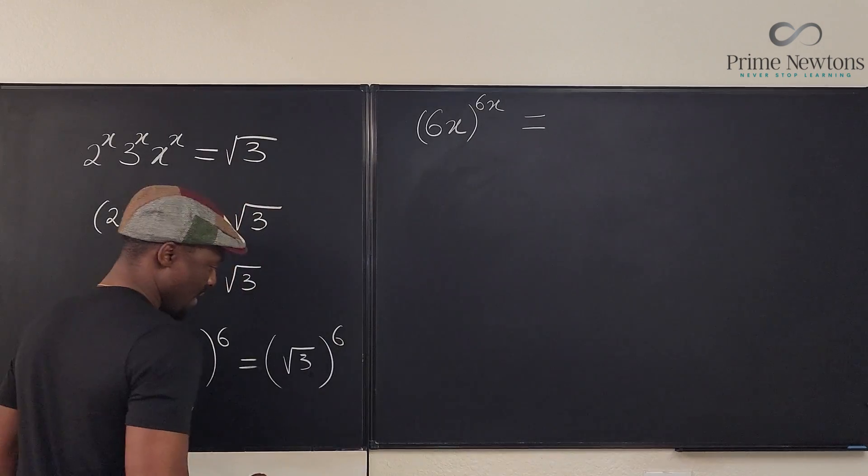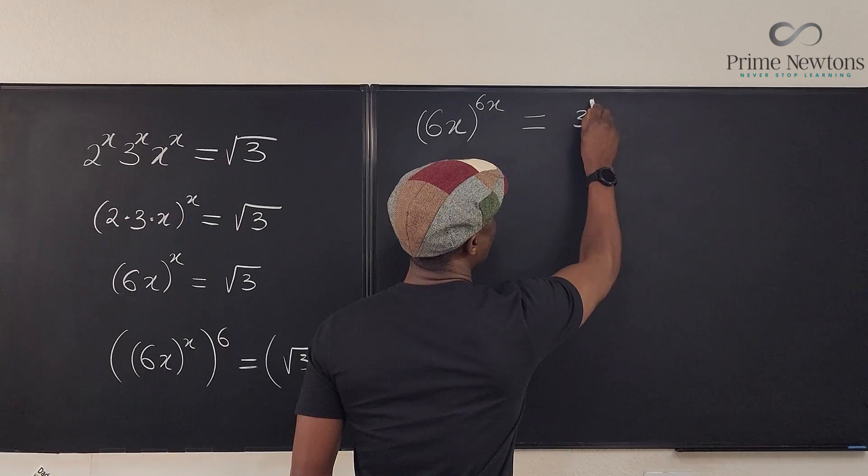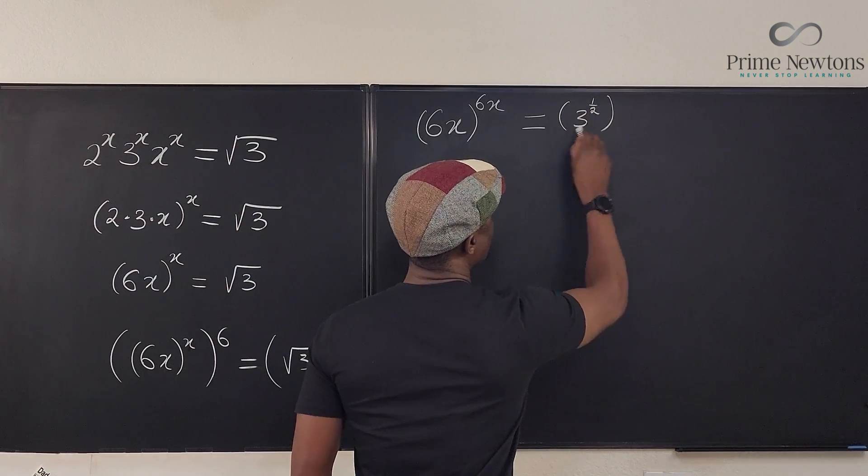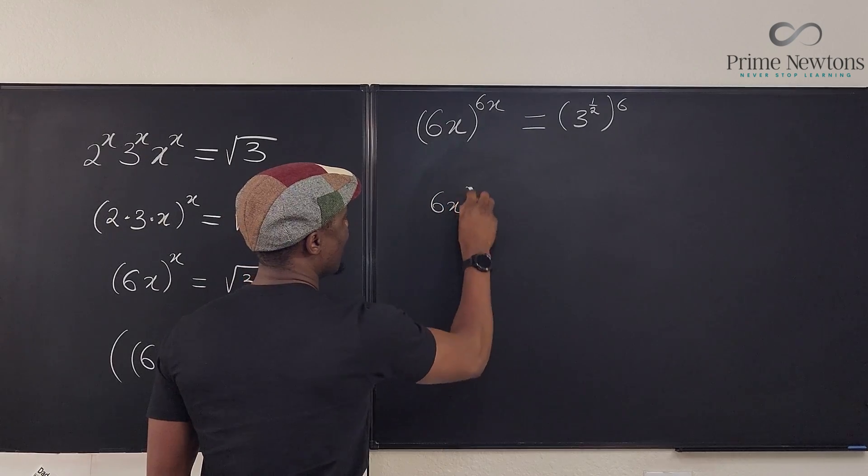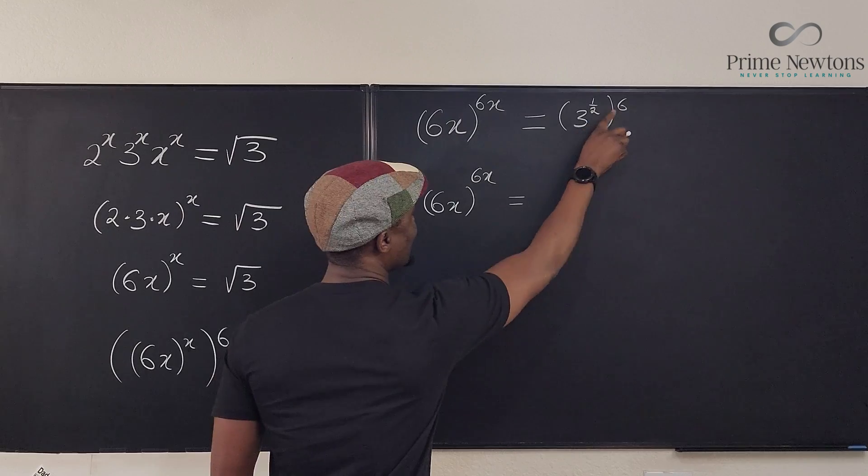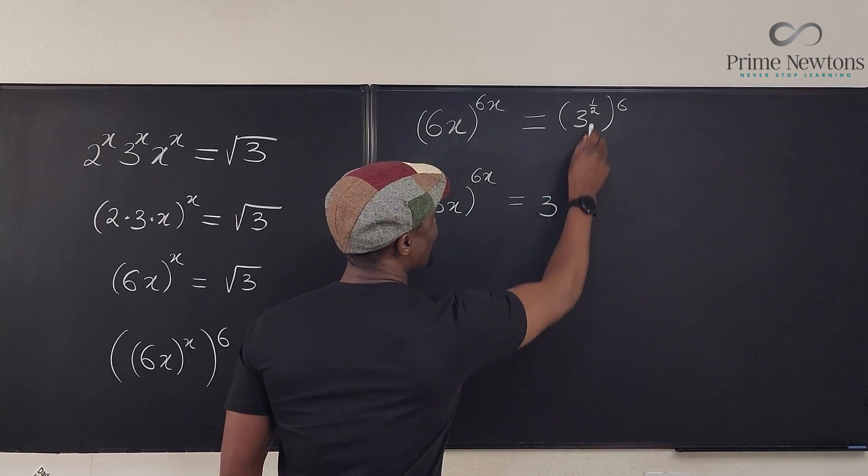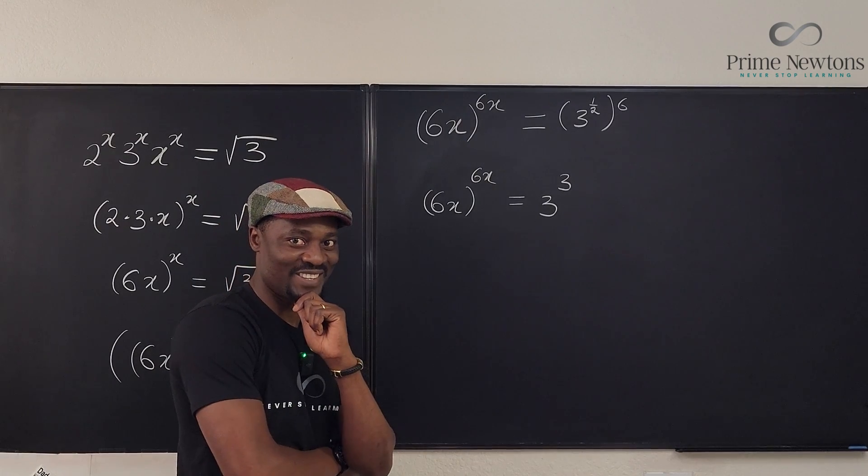Let's solve that here. Well, let's write this as 3 to the 1 half. That's 3 to the 1 half raised to power 6. Watch this. This is 6x raised to power 6x. And what is this? This is 3 raised to power 3. Do you see the answer sitting there waiting for you?